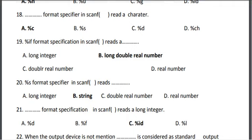Nineteenth, the %a format specification in scanf reads a long double real number. The correct answer is option B, long double real number.